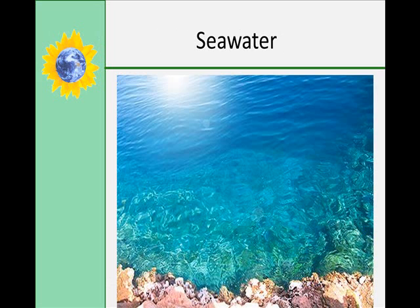Seawater consists of 96.5% water and 3.5% dissolved minerals. The dissolved minerals are typically called salts. Salinity is the total amount of solid material dissolved in water — it's the ratio of the mass of dissolved substances to the mass of water in a sample. Ratios are usually expressed in parts per hundred; however, since the amount of dissolved solids is so small, oceanographers express salinity in parts per thousand. Most of the salt in seawater is sodium chloride, or table salt.